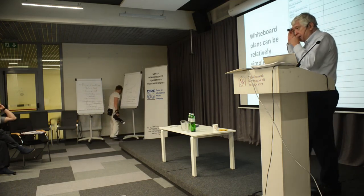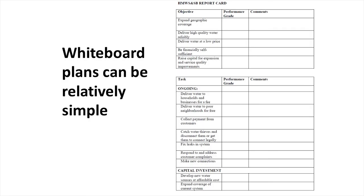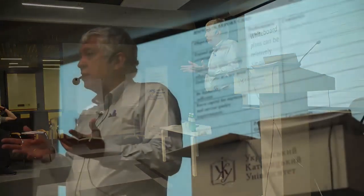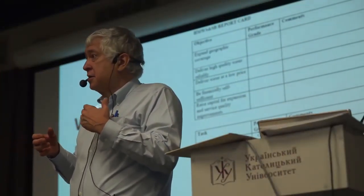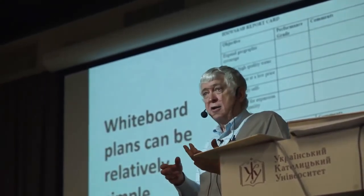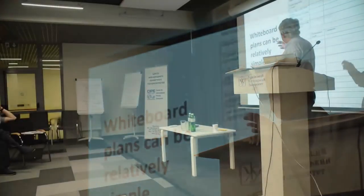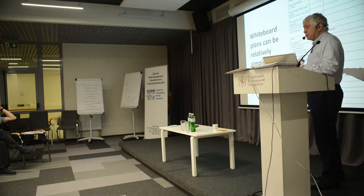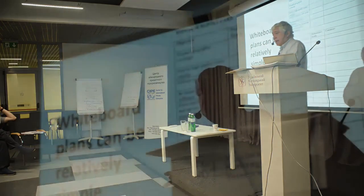Whiteboard plans can be relatively simple. When I teach the Hyderabad Metropolitan Water Supply and Sewerage Board case, I start class with a report card. I say: here are some things the water board should be doing well — things related to overall objectives like expanding geographic coverage, delivering high quality water, being financially self-sufficient — and then some more specific ongoing tasks. I just have students write grades or decide.